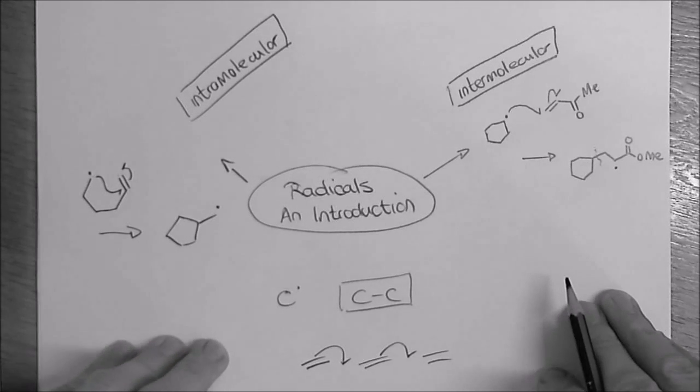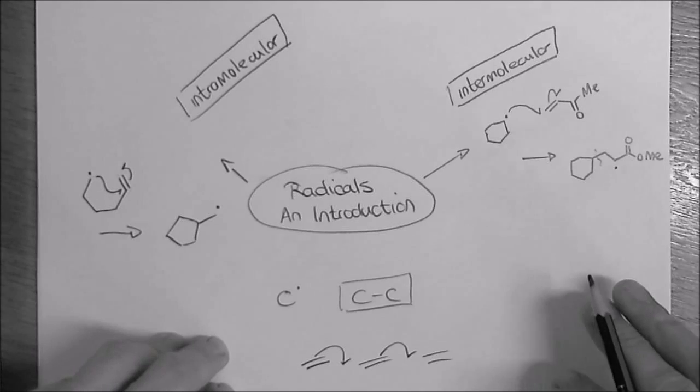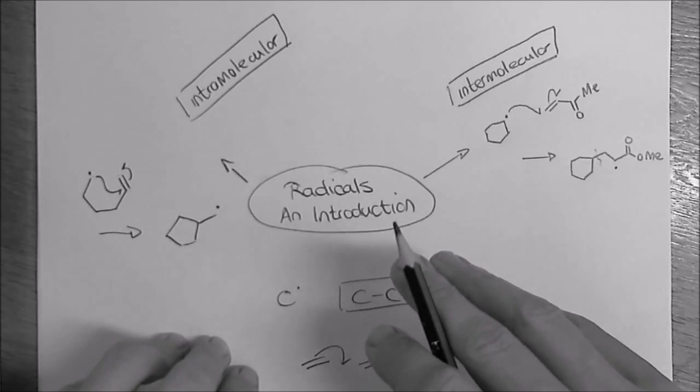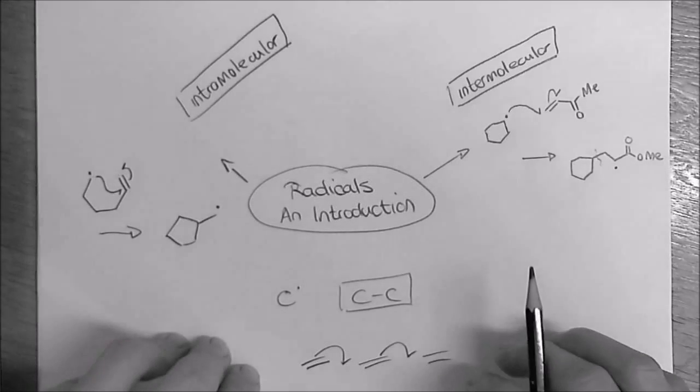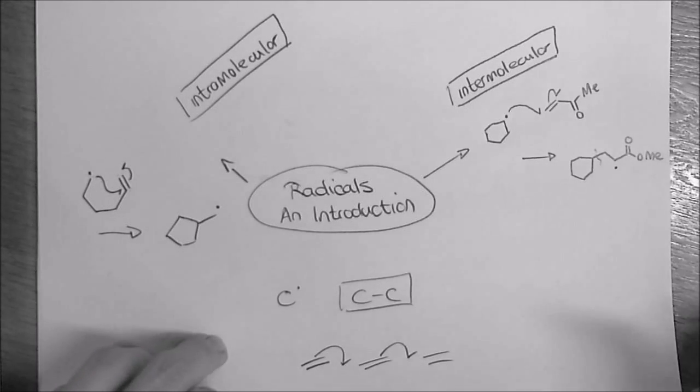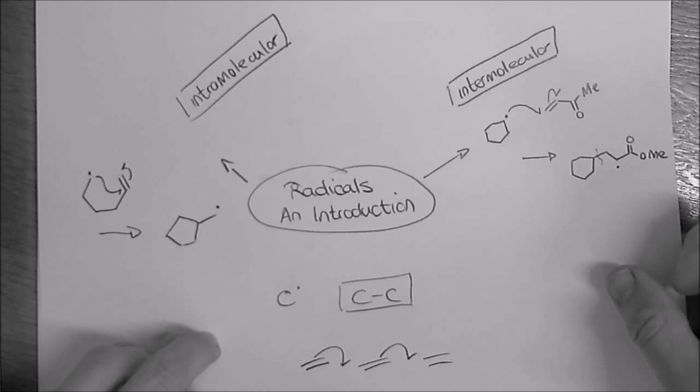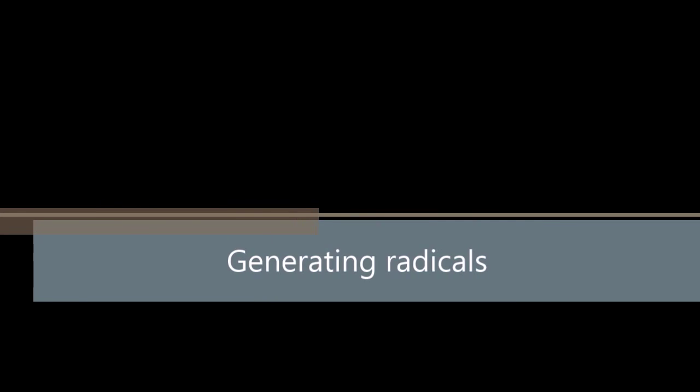What I want to do now is I want to just give a brief overview of the different chemistries involved in radical formation. And there's just four that we're going to be looking at and how we generate a radical in the first place. All right, so we're going to be looking at generating radicals.